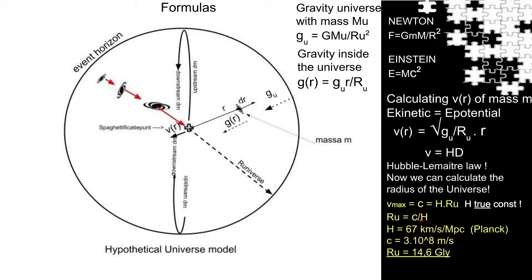H is known. And let's take the latest value of 67 kilometers per second per megaparsec. Our universe is calculated 14.6 giga light-years. Or 14.6 billion light-years.